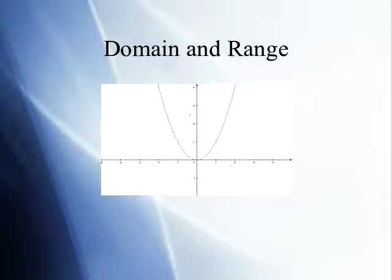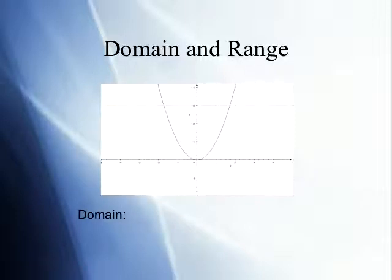As we take a look at this graph of y equals x squared, we are first going to start by looking at its domain. If we were to zoom out on this graph, we would see that this function continues both to the left and to the right infinitely, and this graph would touch every point along the x-axis, both in the negative and positive directions.